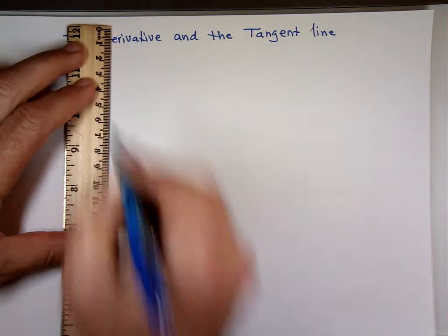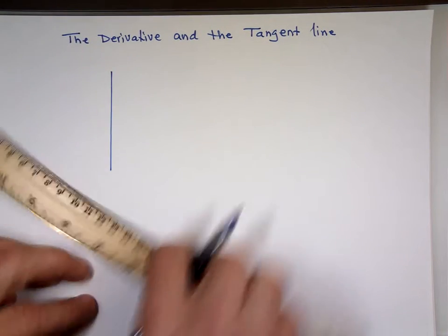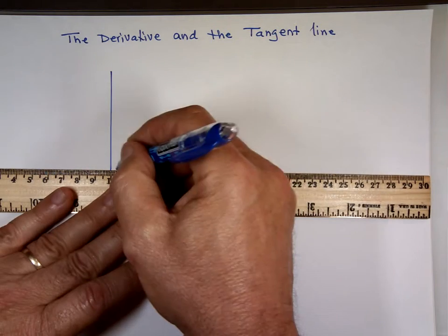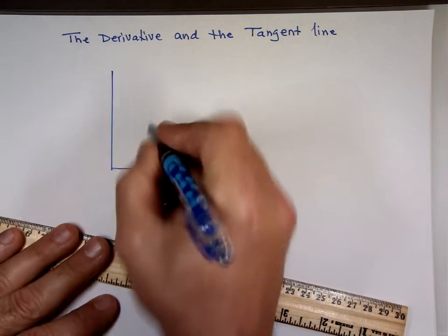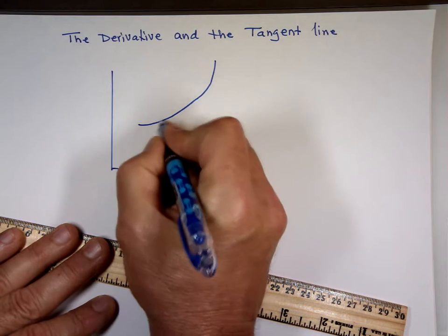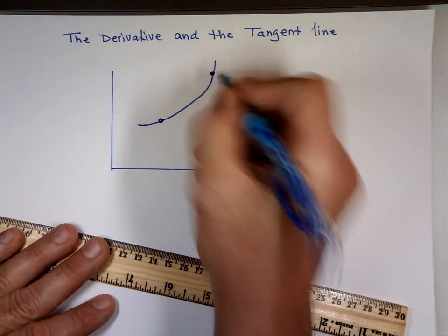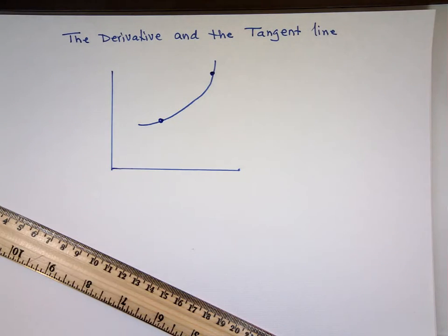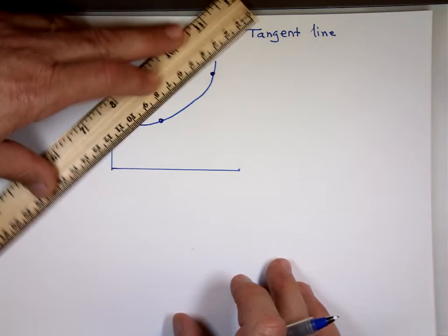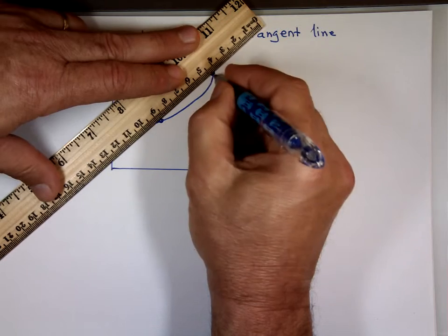Let's say we have a graph with an x-axis and y-axis. If I pick two points and ask: can you find the slope of the line touching them — can you tell me what the slope of that line is?